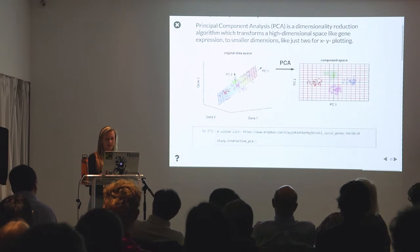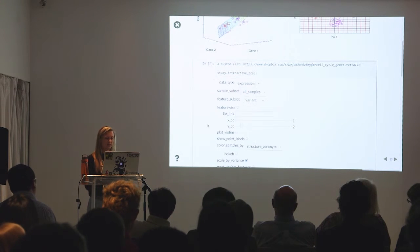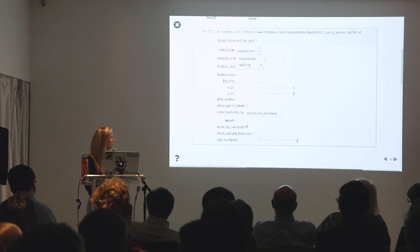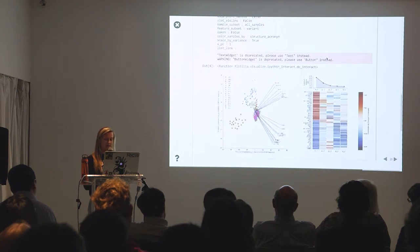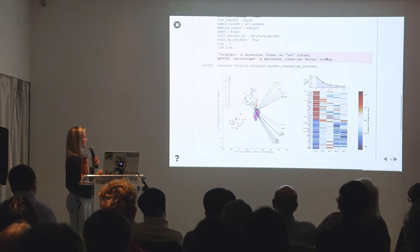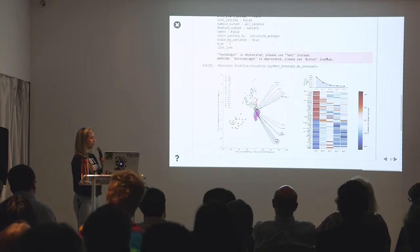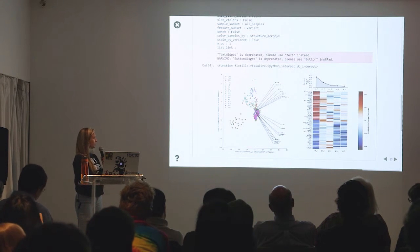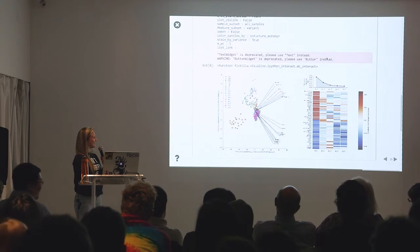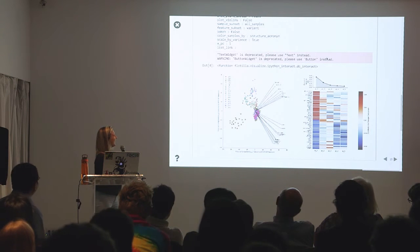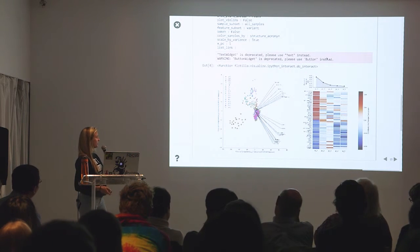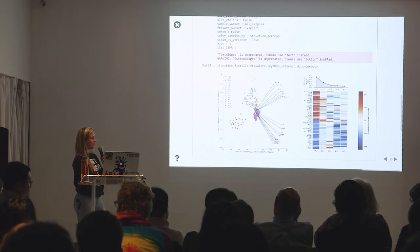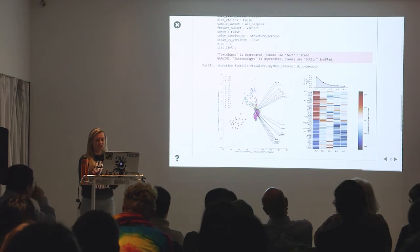So let's get started. We have this interactive PCA function. The data — we support both expression and splicing data, and we only have splicing data in this one. As you can see, we have several different sample subsets. Let's look at the graph itself. These orange squares are the cerebellar cortex data, these purple triangles are the striatum, the teal squares are the mediodorsal something of thalamus, and the orange triangles are the amygdala. Everything else is kind of smooshed on top of each other. It looks like the difference between the cerebellar cortex and everything else is contributing a lot to the variance. So let's take that out.